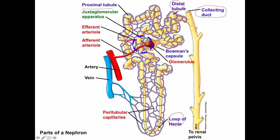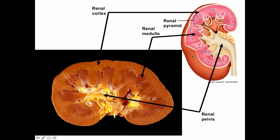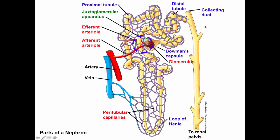Every collecting duct is physically attached to about 8 to 10 nephrons. If we look back at the renal pyramid, that pyramid structure is an area where many collecting ducts drain urine into the renal pelvis. From the collecting duct, urine moves into the renal pelvis and then onto the ureter. That's the tubular component.